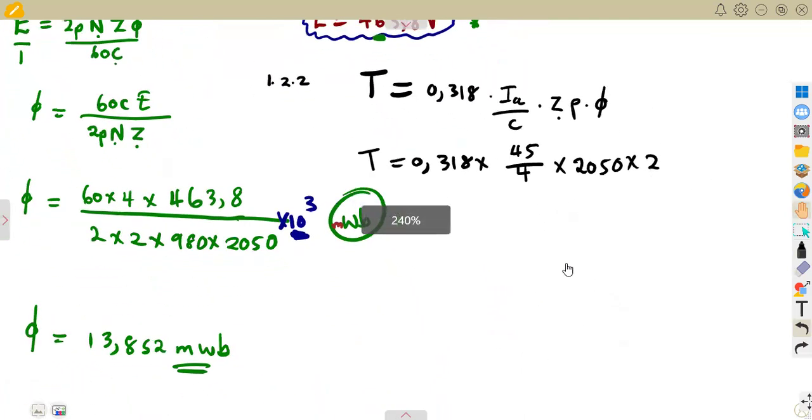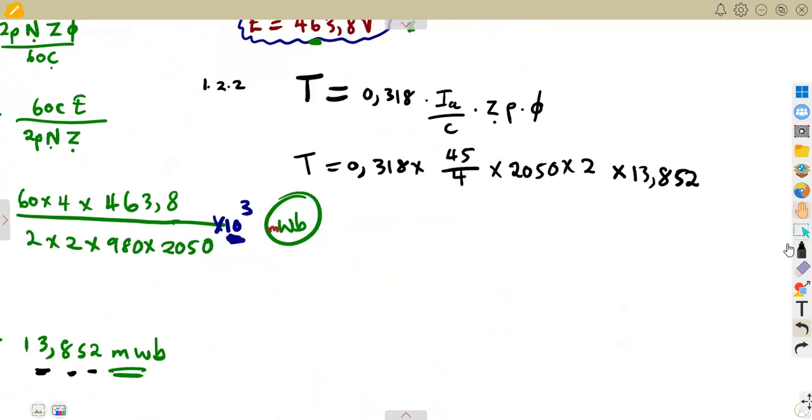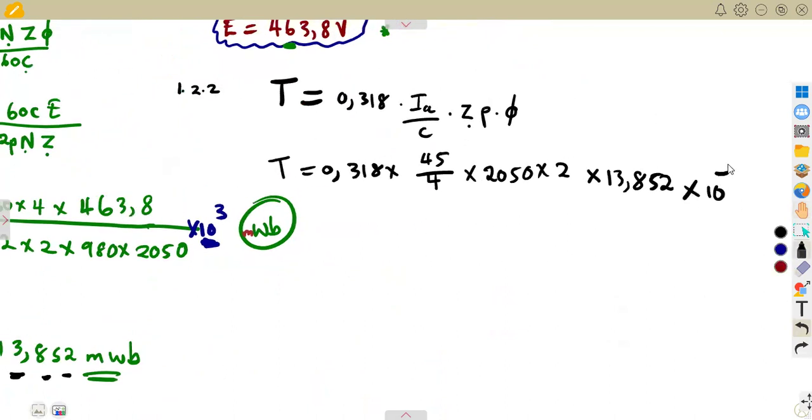Then the useful flux, which is the one that we just calculated now. So remember our useful flux here, we got 13.852. So that is going to be 13.852 milliwebers. So you multiply by 10 to the power of—this is rewriting the milliwebers, we are not converting to milliwebers. Remember, just a milli as it is, it is 10 to the exponent of a negative 3.